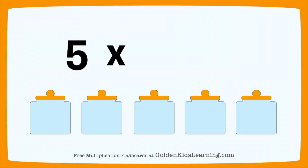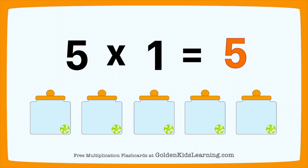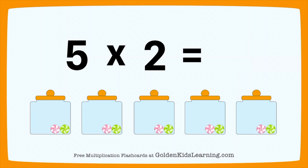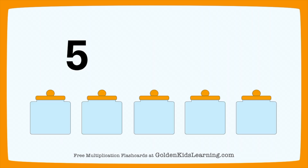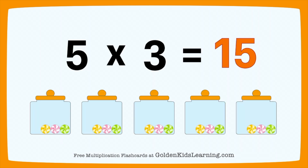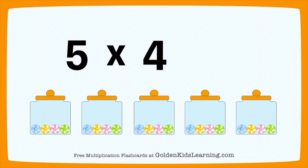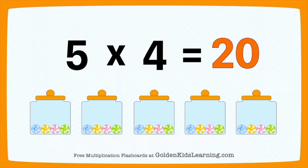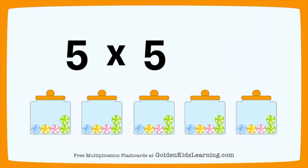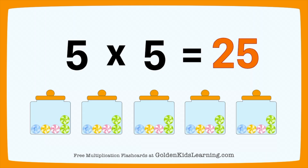5 times 1 equals 5. 5 times 2 equals 10. 5 times 3 equals 15. 5 times 4 equals 20. 5 times 5 equals 25.